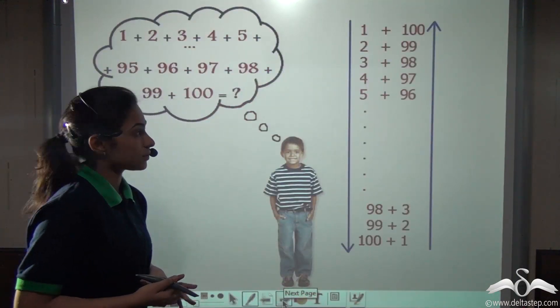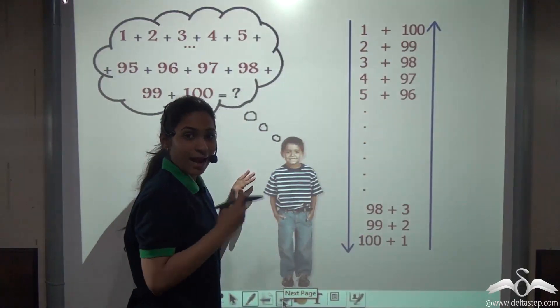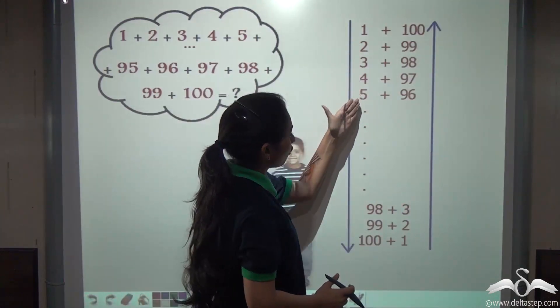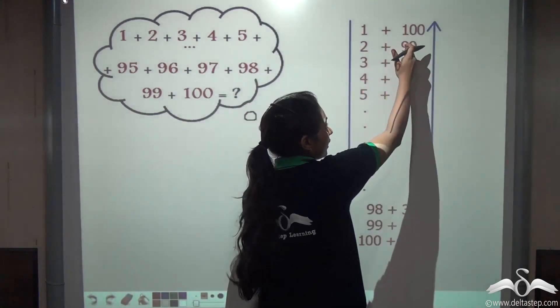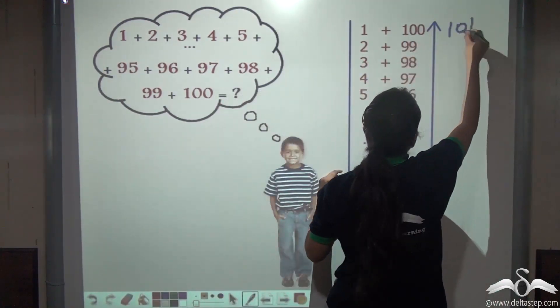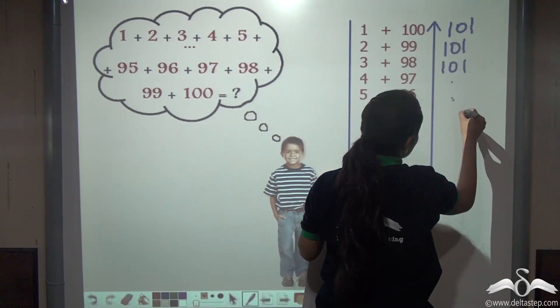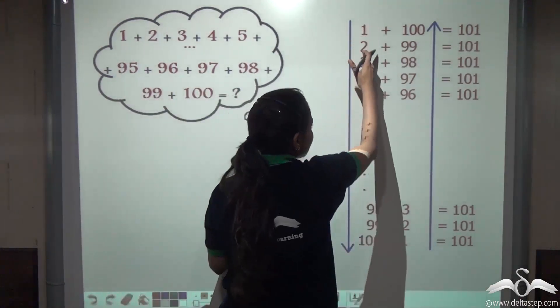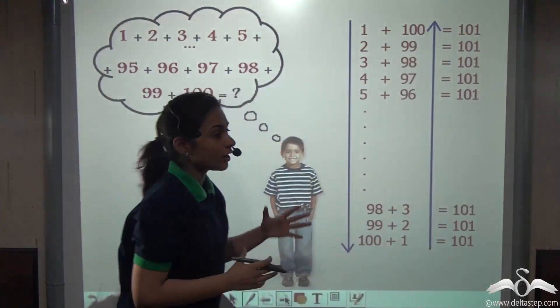Now let's see how Karl did this. He thought that if he wrote these numbers from 1 to 100 and then added them with the reverse of these numbers. Writing 1, 2, 3, 4, 5, 6 and so on, and adding them with 100, 99, 98 and so on. What will you get? 1 plus 100 equals 101, 2 plus 99 equals 101, 3 plus 98 equals 101, and so on. Each and every term will give the same answer: 101.